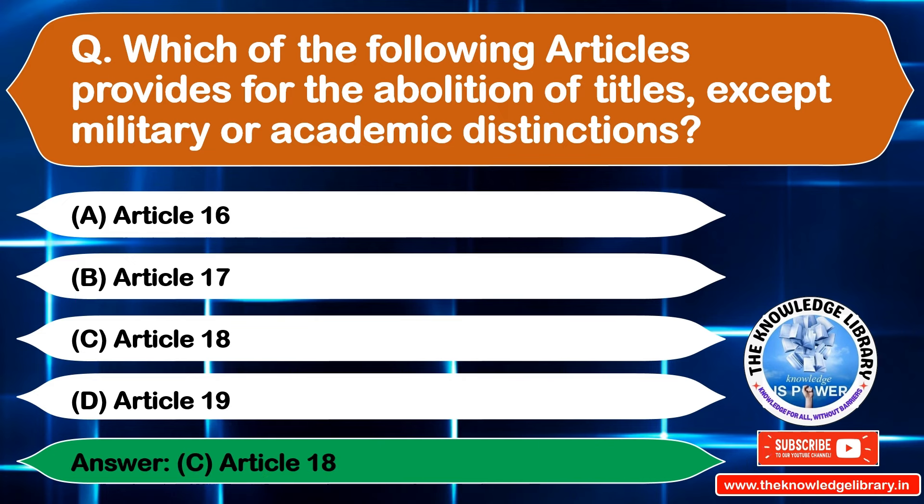The next question is: which fundamental right protects people from forced religious conversion? Option A: Right to Freedom of Religion, Option B: Right to Equality, Option C: Right to Freedom, Option D: Cultural and Educational Rights. The correct answer is Option A: Right to Freedom of Religion.